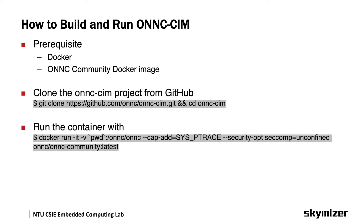Now we are going to talk about building and running the simulator. First, please make sure your host machine has Docker installed. In order to simplify the process, a Docker image is provided with all packages that ONIX and the CIM simulator depend on pre-installed. Therefore, we can easily compile and run the simulator in the Docker container. If you need to compile the project outside the Docker container, you will need to check all the dependencies yourself.